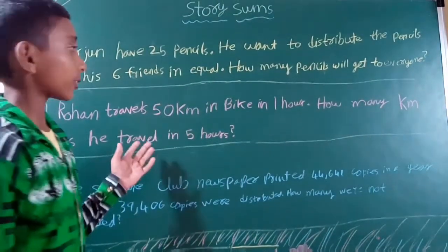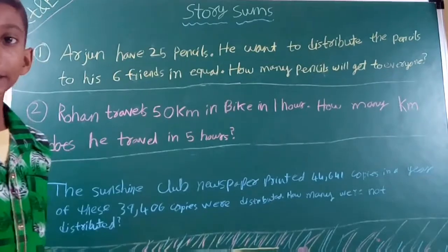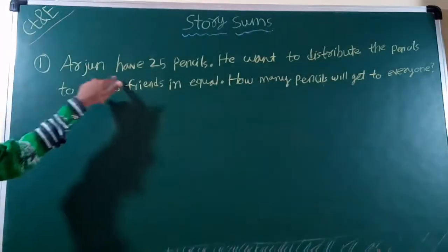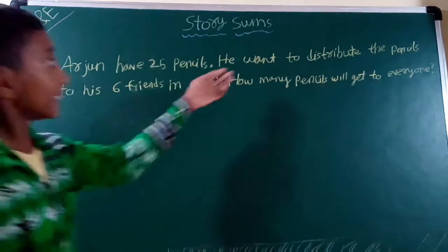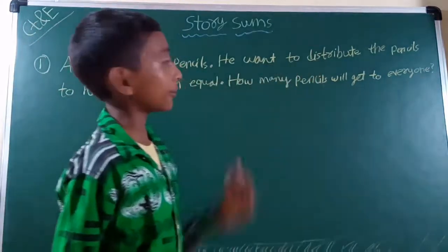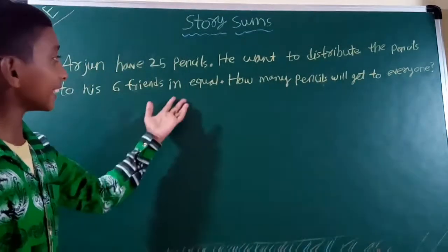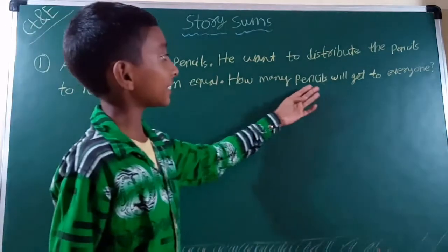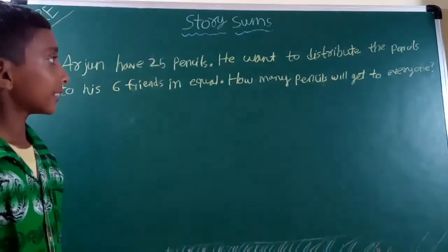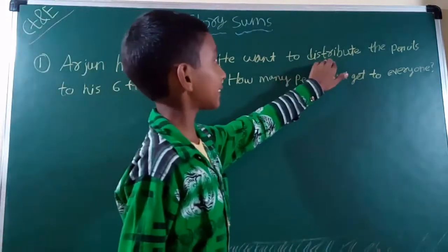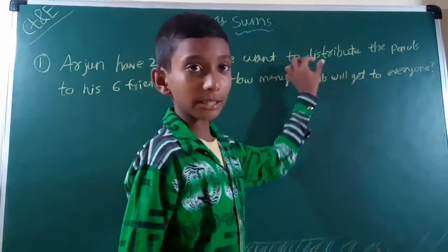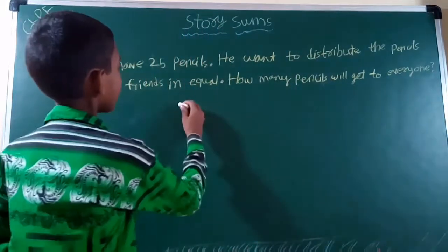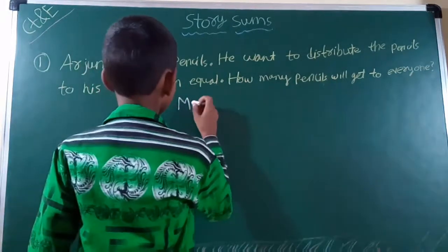Now I will solve these questions. Answer: Arjun has 25 pencils. He wants to distribute the pencils to his friends equally. The question asks how many pencils will each person get. So, since he distributes or divides, the method is division.